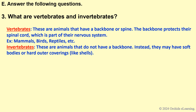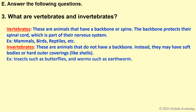Invertebrates: these are animals that do not have a backbone. Instead, they may have soft bodies or hard outer coverings like shells. Examples include insects such as butterflies and worms such as earthworms.